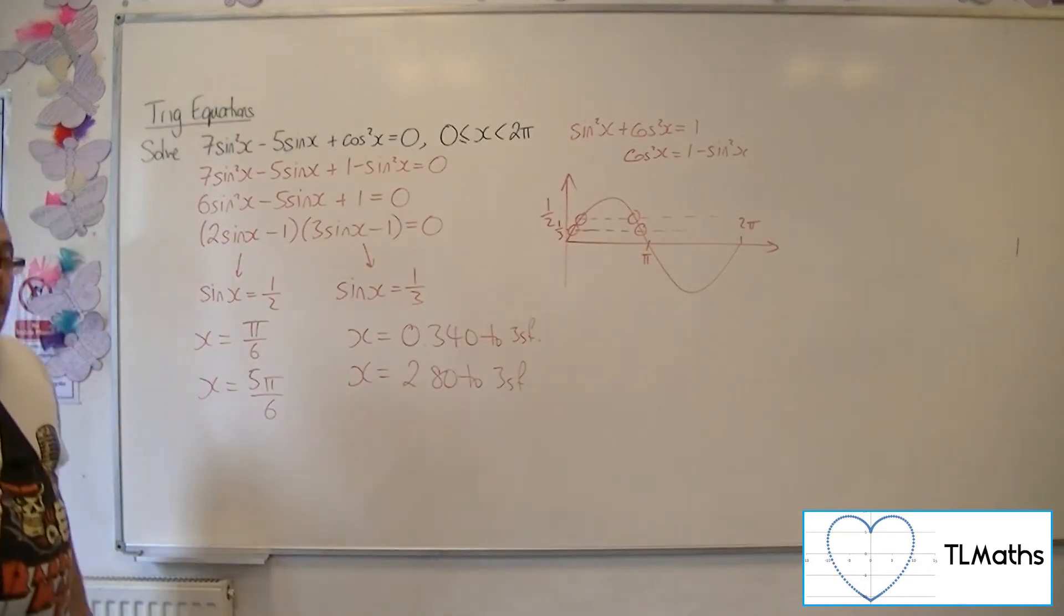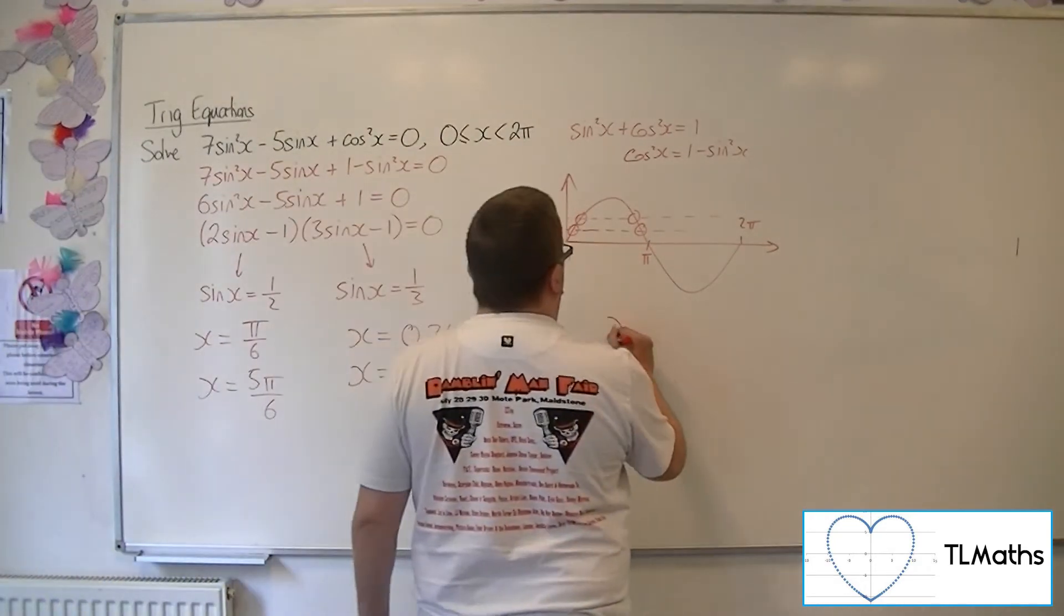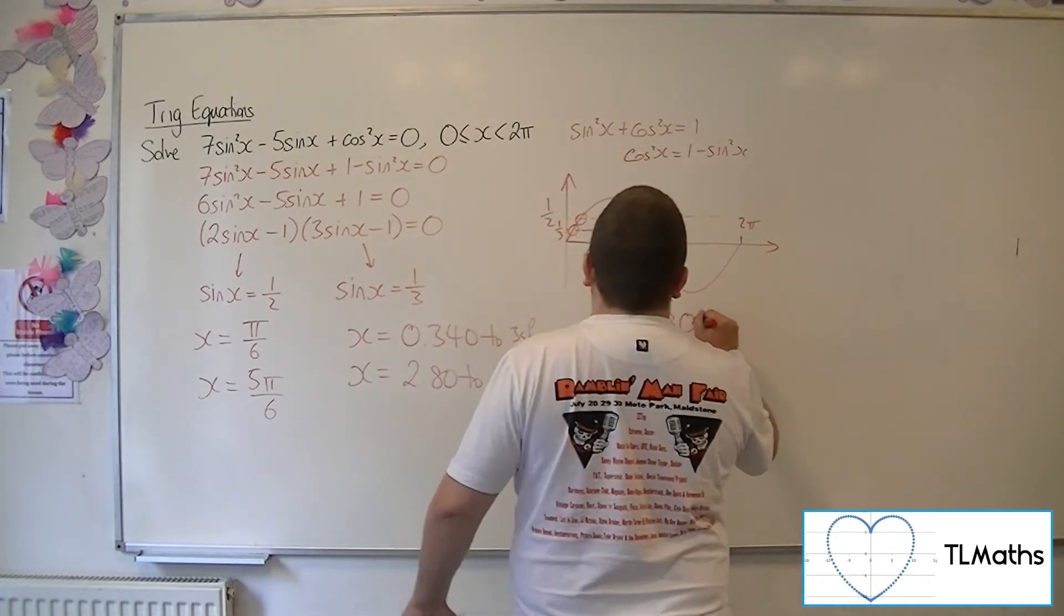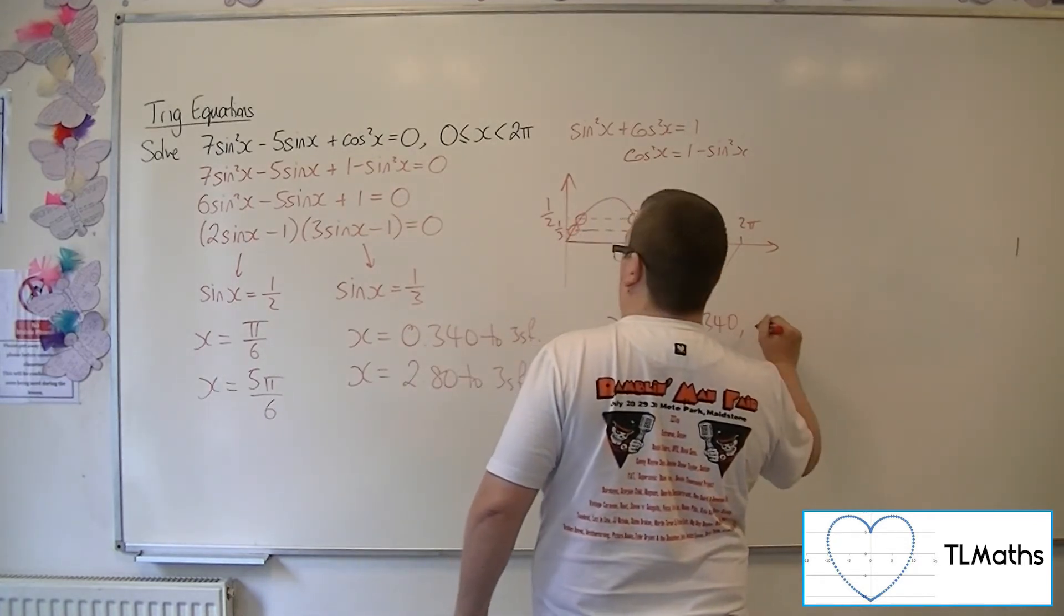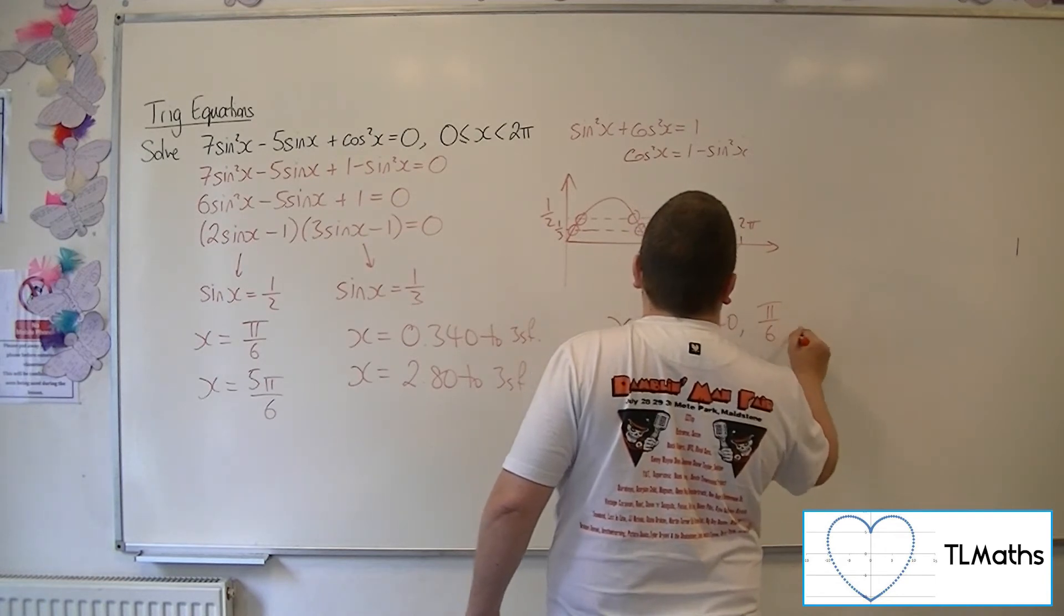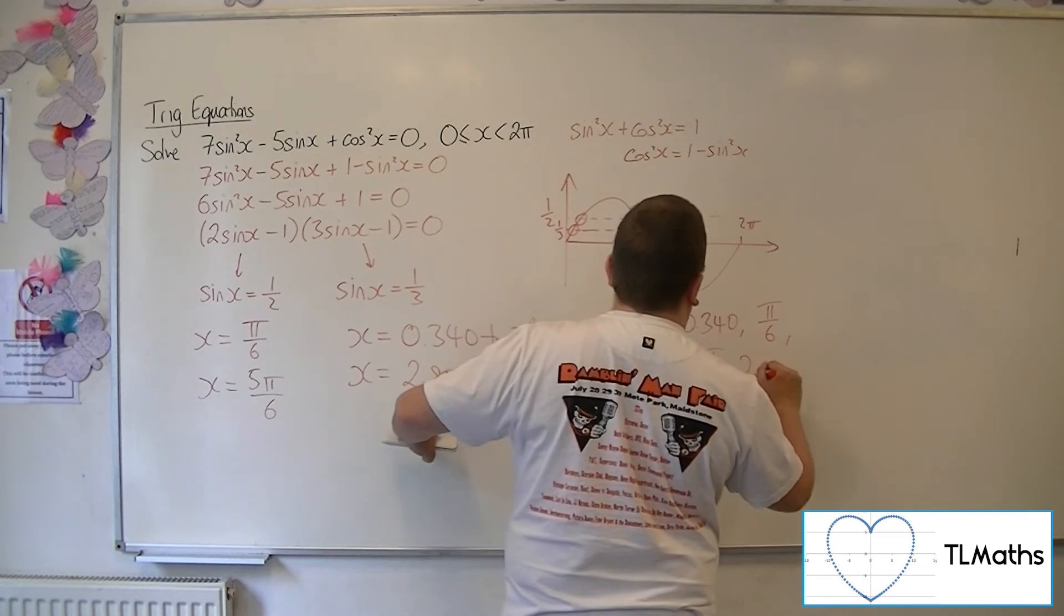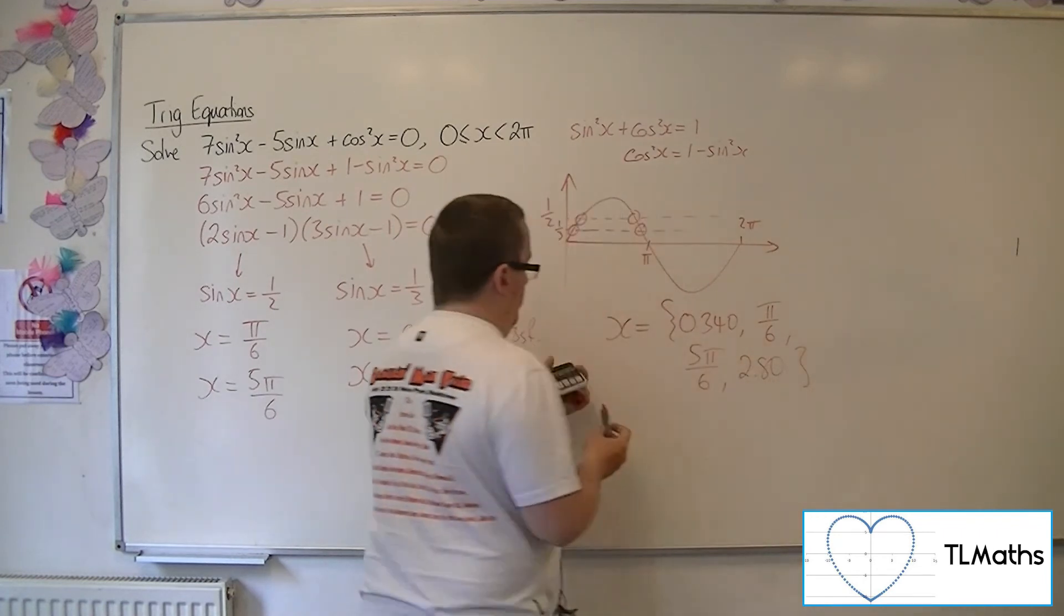These are the four solutions to the original problem. In order of size: 0.340, π/6, 5π/6, and 2.80 to 3 significant figures.